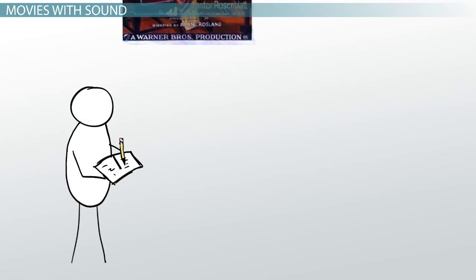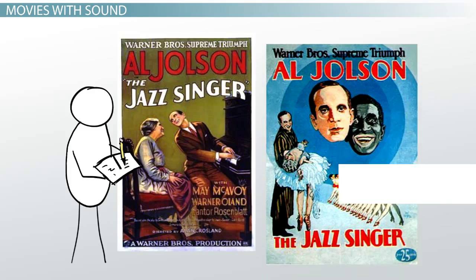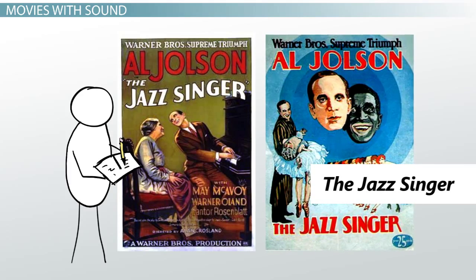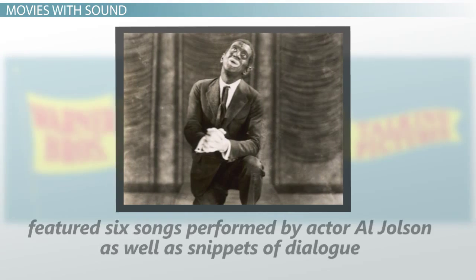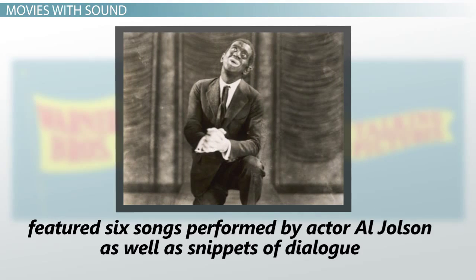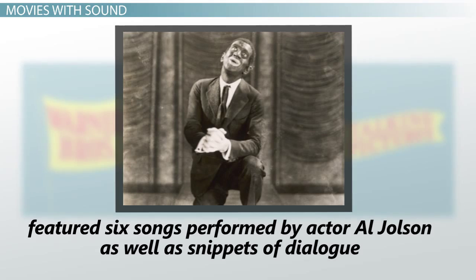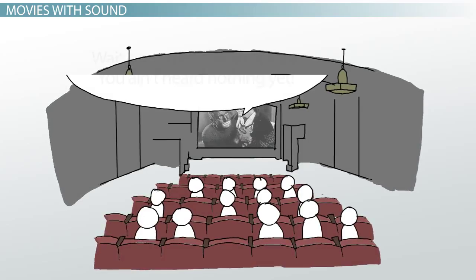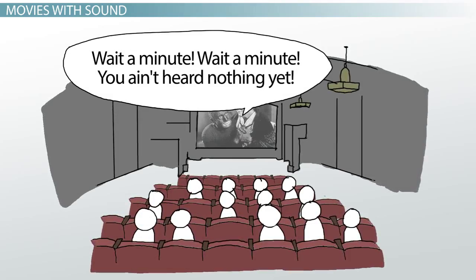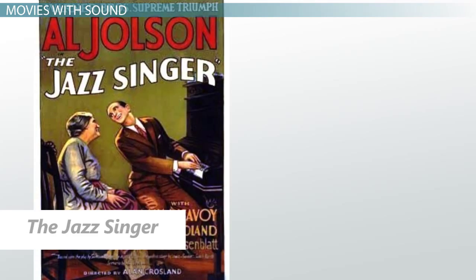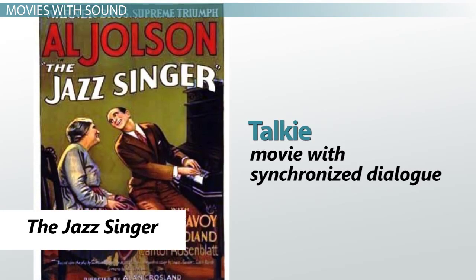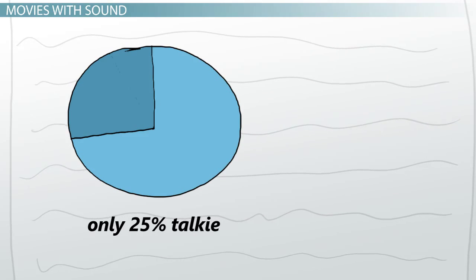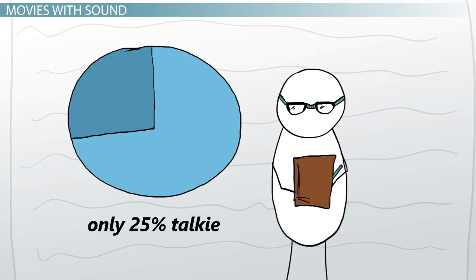The next year, 1927, saw an even greater sound in film novelty with the release of Warner Bros. The Jazz Singer. This film also used the Vitaphone, but it featured six songs performed by actor Al Jolson, as well as snippets of dialogue improvised by Jolson as he introduced his songs, including the famous line, 'Wait a minute, wait a minute, you ain't heard nothing yet.' The Jazz Singer can be considered the first feature-length talkie, or movie with synchronized dialogue, but really it was only 25% talkie, with a little over 350 words total.